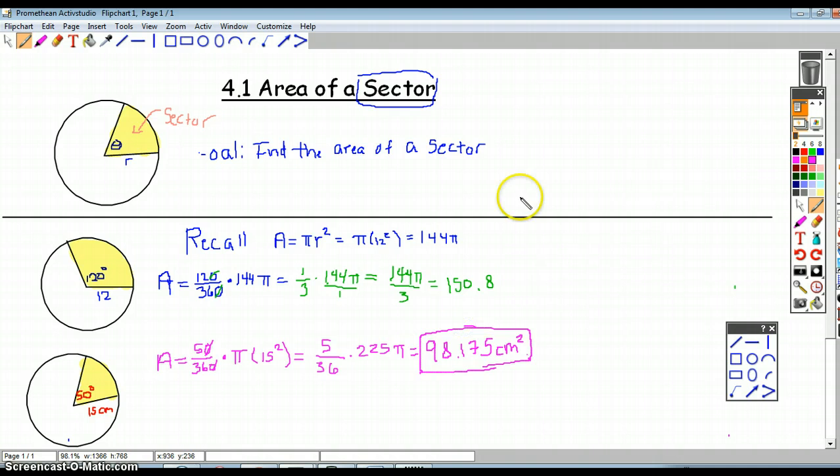Let's jot down our formula. It follows the exact same logic that our formula for length of an arc followed. The area is our central angle divided by 360 - that gives us the fraction of the total area - times the area of the circle, which we know would be π r squared.